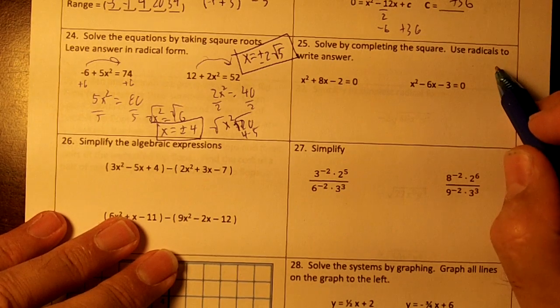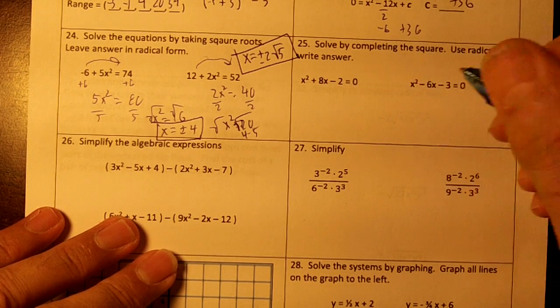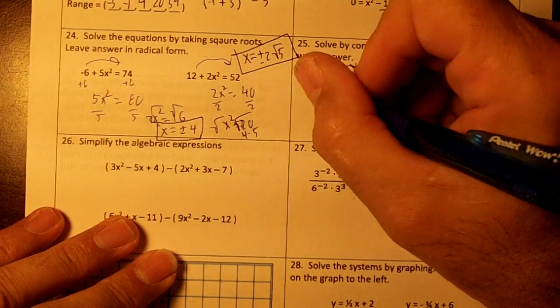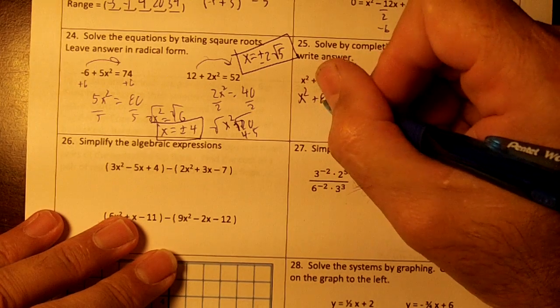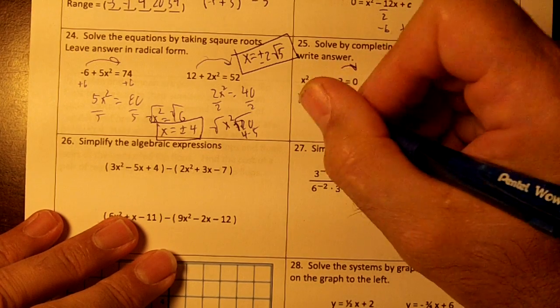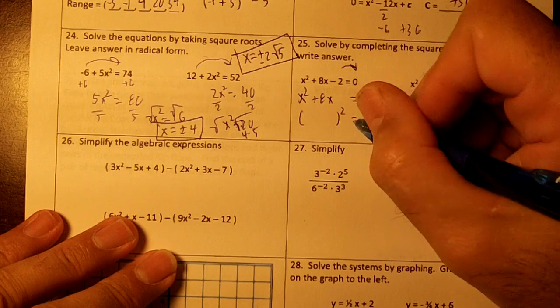Solve by completing the square. Use radicals to write the answer. We're going to move over the 2. x² plus 8x equals 2. Draw your parentheses here and square it.